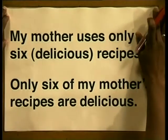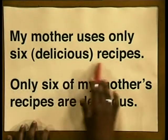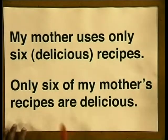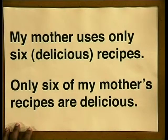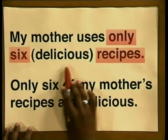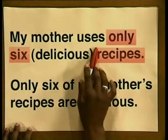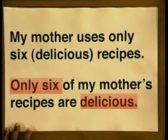But we can fix this problem and clear up the confusion by making a few minor adjustments. Sometimes, though, we have to rewrite the whole sentence. So here are two possibilities: 'My mother uses only six delicious recipes.' And 'Only six of my mother's recipes are delicious.' In each of these sentences, the meaning is now clear. In the first one, she uses only six recipes, but these are delicious. In the second sentence, the speaker is making his feelings clear about her recipes.